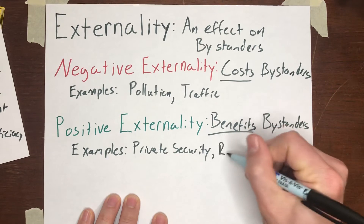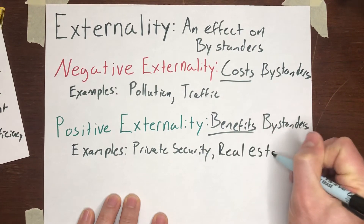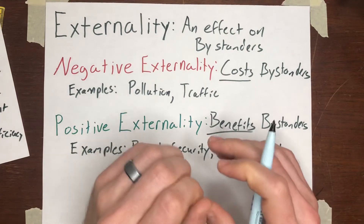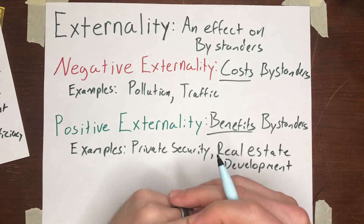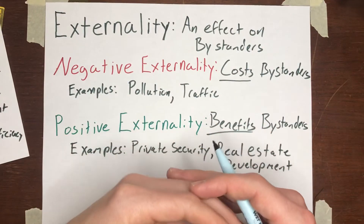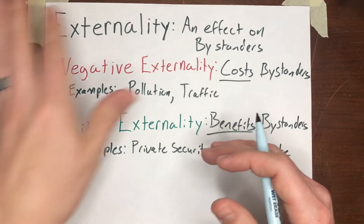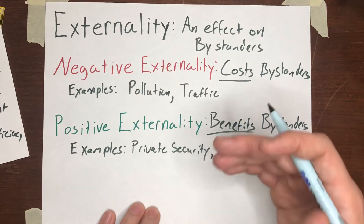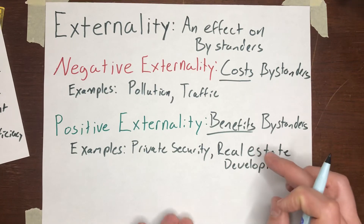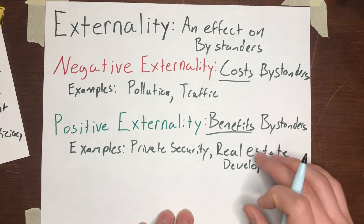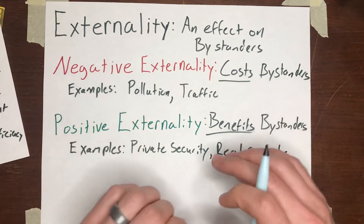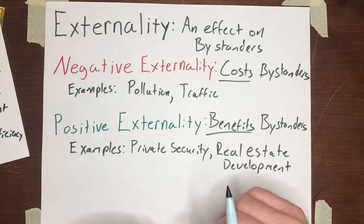Another example might be real estate development. If a developer builds a new shopping mall, that could have a positive impact on property values in the nearby vicinity. Or if a city government develops real estate into a park, that makes the homes on the periphery more attractive and more valuable on the market. But the real estate developer is really just worried about how much he can increase the value of his own property — he's not thinking about how much value he confers onto the people around the property he is developing.